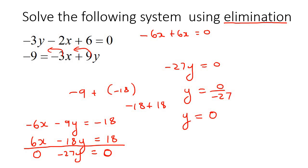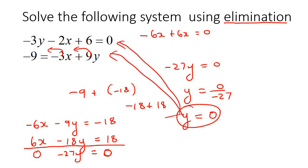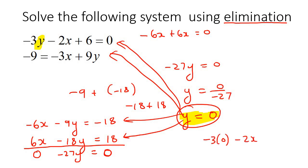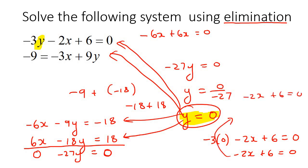Now we know y is zero. Take that and plug it back into one of the equations — any of them will give the same answer. I'll choose the top original equation. Plugging y equals zero in: negative 3 times zero minus 2x plus 6 equals zero, which gives negative 2x plus 6 equals zero. Taking 2x over to the other side and dividing by 2, we get x equals 3. So the final answer is x equals 3 and y equals zero.